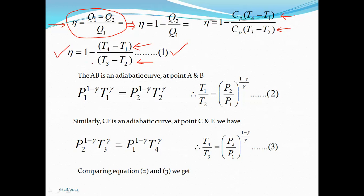According to the indicator diagram, AB is an adiabatic curve. At points A and B, we apply adiabatic relations from the thermodynamics chapter. According to that, P1 raised to (1 minus gamma) into T1 raised to gamma equals P2 raised to (1 minus gamma) into T2 raised to gamma. We can modify this as T1 upon T2 equals (P2 upon P1) raised to (1 minus gamma) upon gamma. This is equation 2.